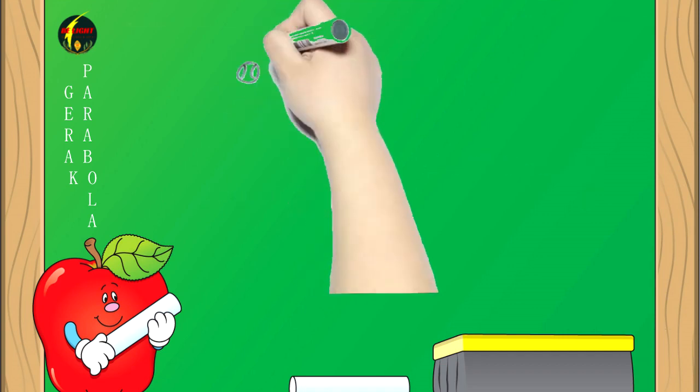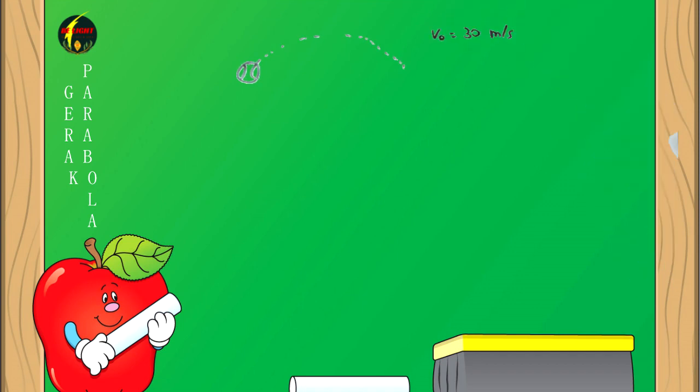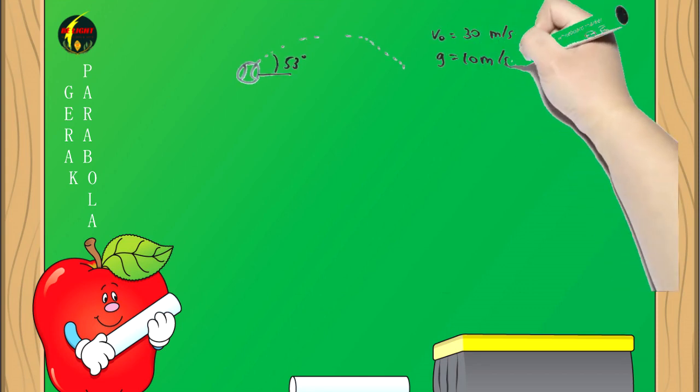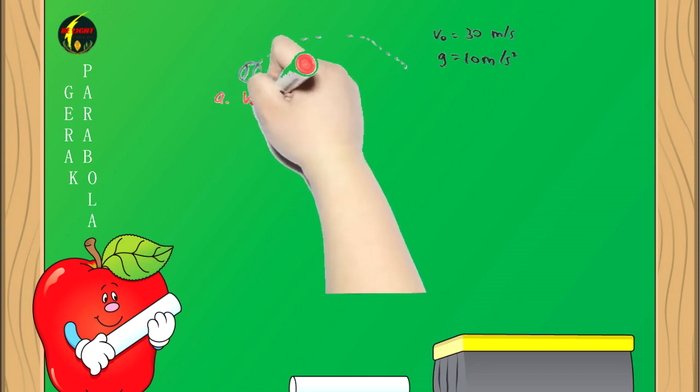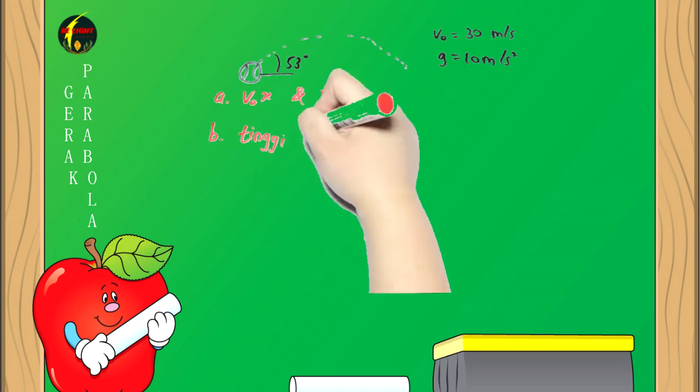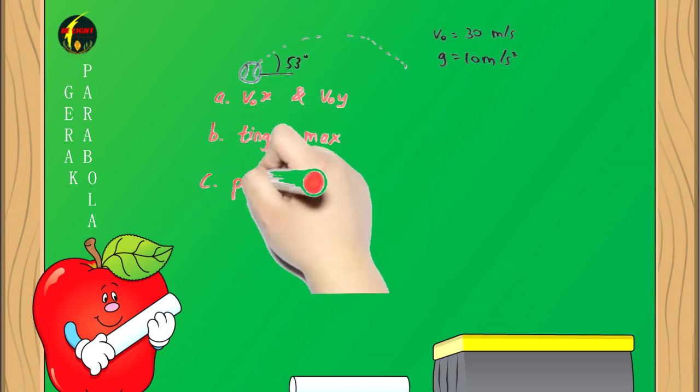Sebuah bola dilemparkan dengan kecepatan V0 = 30 meter per detik membentuk sudut 53 derajat dengan gravitasi 10 meter per detik kuadrat. Tentukan: A. V0X dan V0Y, B. Tinggi maksimum, C. Posisi pada T = 0,5 sekon.